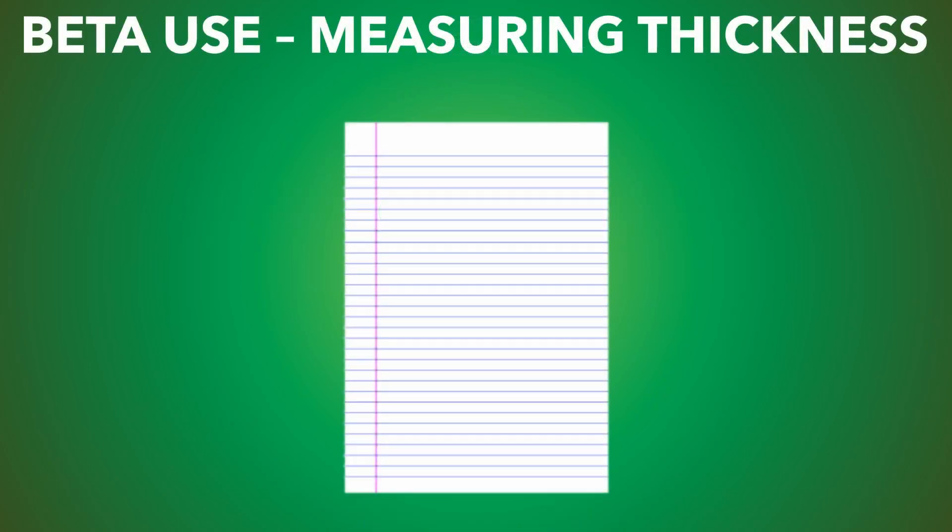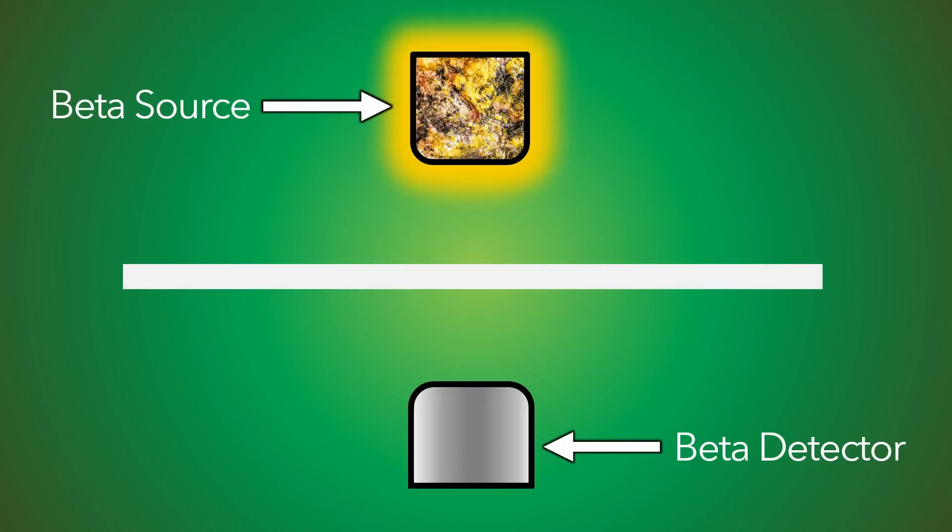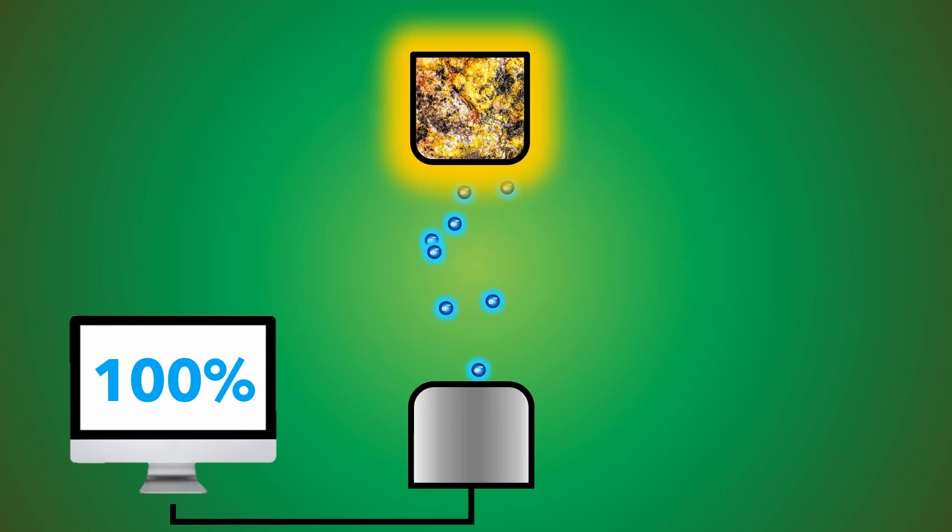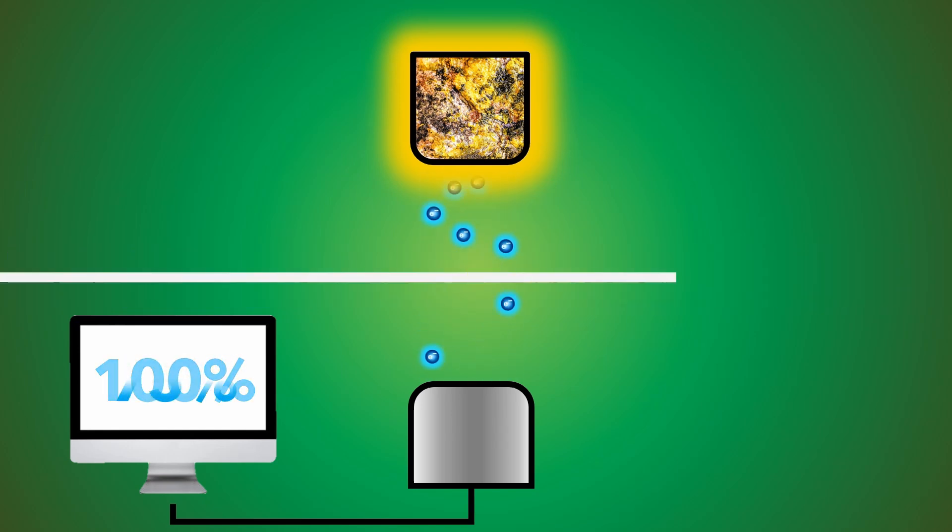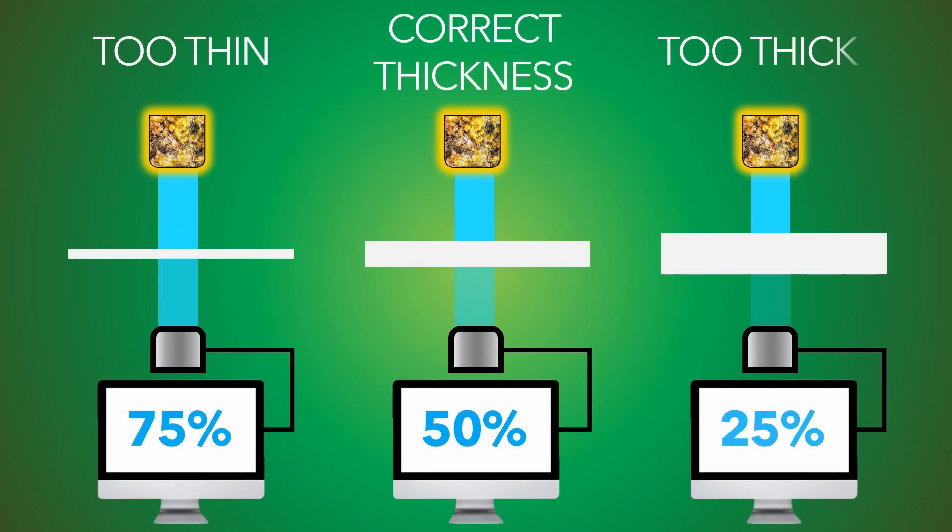Beta use: measuring thickness of objects. Take a sheet of paper. A beta source is placed on one side and a detector the other. A sheet of paper with the desired thickness may absorb 50% of beta particles, but thicker paper would absorb more beta and thinner paper less beta. So then thickness can be tested without any physical contact.